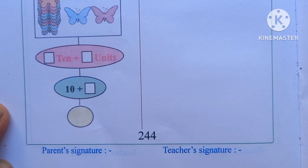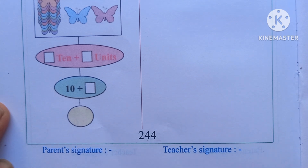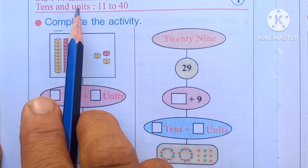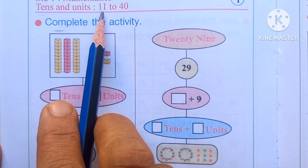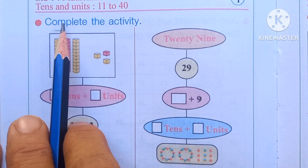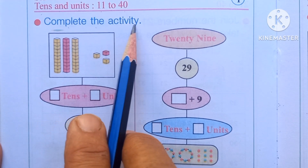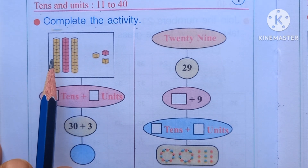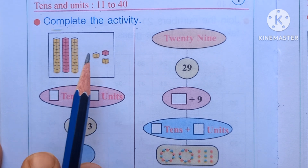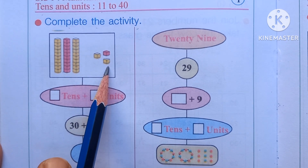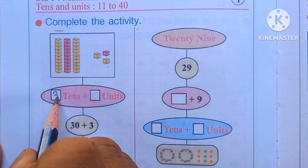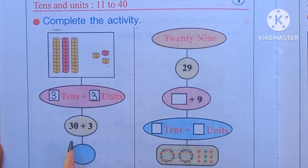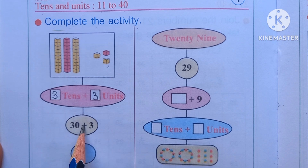Page 244. Here, tens and units, 11 to 40. Complete the activity. Here are 3 tens and 3 units. Therefore, write here: 3 tens plus 3 units, that is 30 plus 3, means 33.